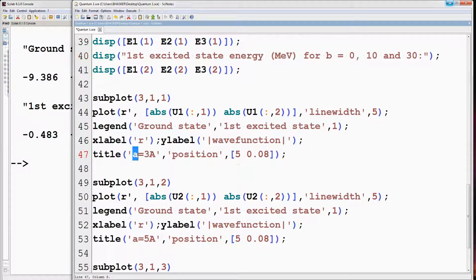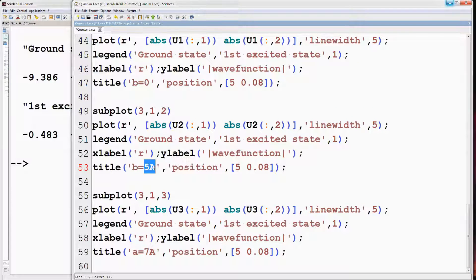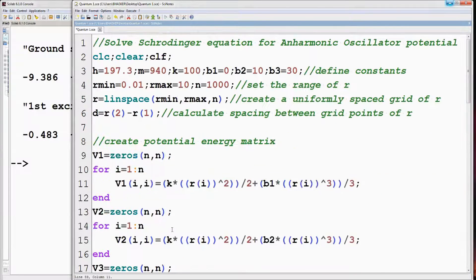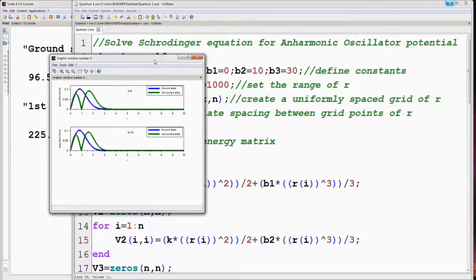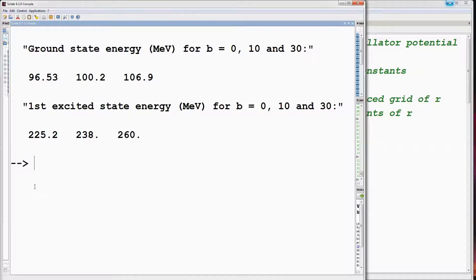Also modify title. Run this program. These are the values of energy in MeV for different values of B.